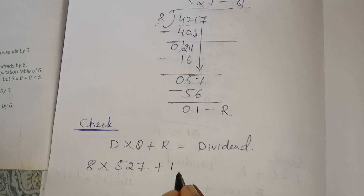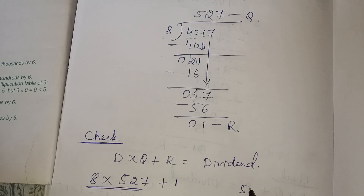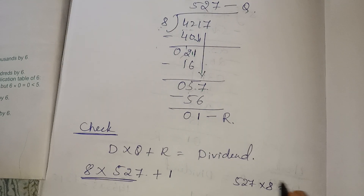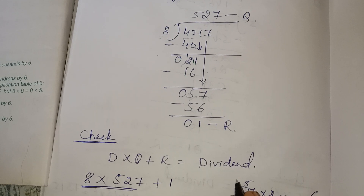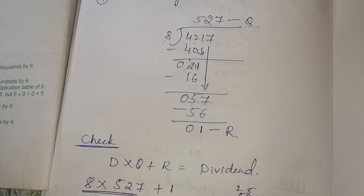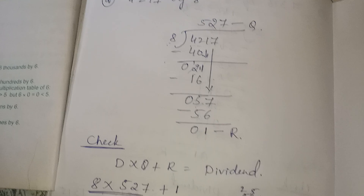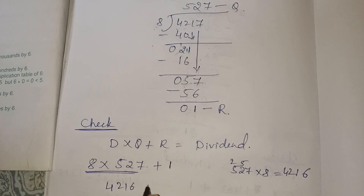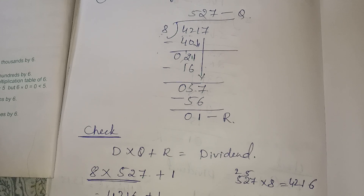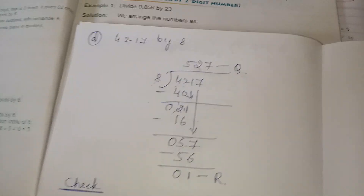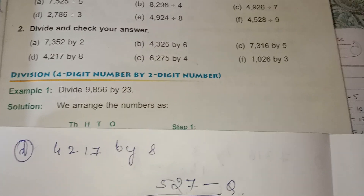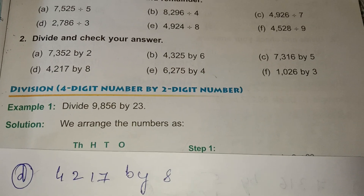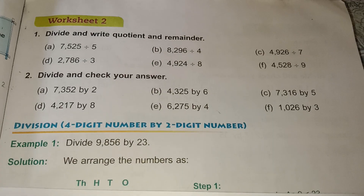Add the remainder, then multiply 527 into 8: 8 sevens are 56; 8 twos are 16 plus 5 is 21; 8 fives are 40 plus 2 is 42. That gives 4216 plus 1 equals 4217. So 4217 is the exact dividend. The remaining problems, do by yourself.